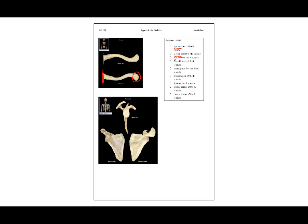The acromion of the right scapula is this flat surface. We can actually see it from this anterior view, as well as from this lateral view. This is the acromion.